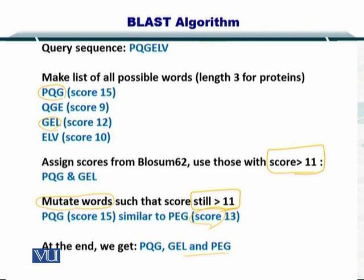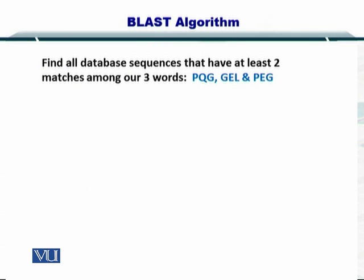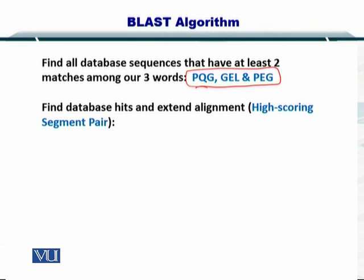In the end, we have three words: PQG, GEL, and PEG. We go to the database with these three words and search it. A hit essentially means where we get matches for these words within the database. Once we have a hit — say this is a protein from your database and we get a hit for PQG — then we try to extend this alignment.